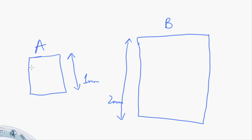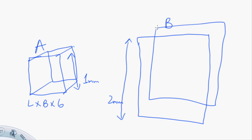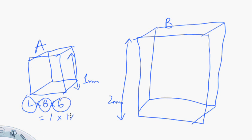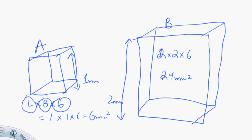The formula for surface area is length × breadth × 6, because the cell is a cube — it's three-dimensional. So the surface area of the smaller cell A would be 1 × 1 × 6, which equals 6 mm². For cell B, the larger cell, the surface area would be 2 × 2 × 6, which is 4 × 6 = 24 mm².